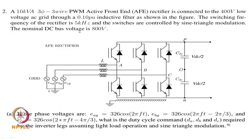The first question is: what is the duty cycle command required by the legs of the inverter assuming light load and sine-triangle modulation? At light loads, the drop across the inductor would be small, so the voltage at the grid would be close to the voltage at the A, B, and C points. We can use that to determine the duty cycle required for legs A, B, and C.